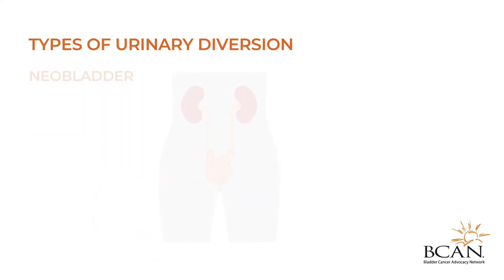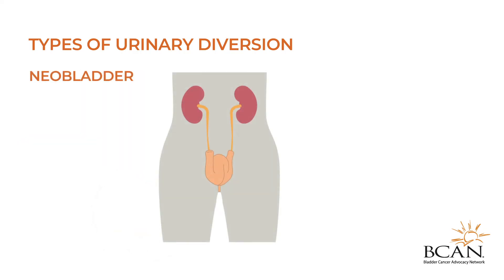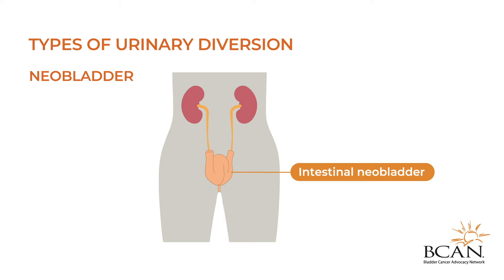Another common type of urinary diversion is called a neobladder. This is when a new bladder is made, usually constructed out of a piece of intestine and attached to the urethra.